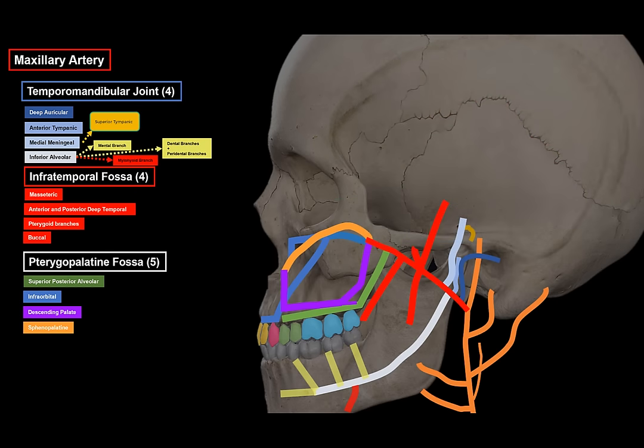Lastly from the pterygopalatine fossa, there is the artery of the pterygoid canal. It may have various origin points but mainly runs in the pterygoid canal, supplying the auditory tube and a small part of the tympanic cavity.